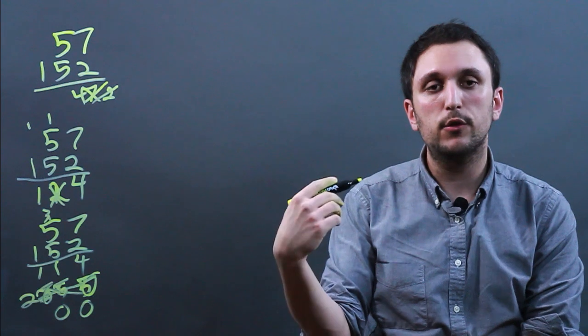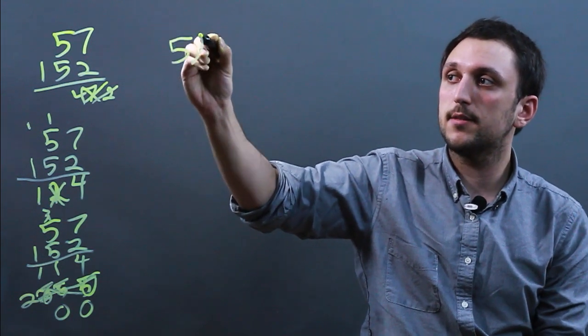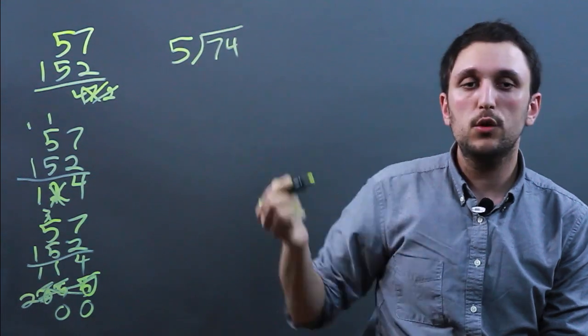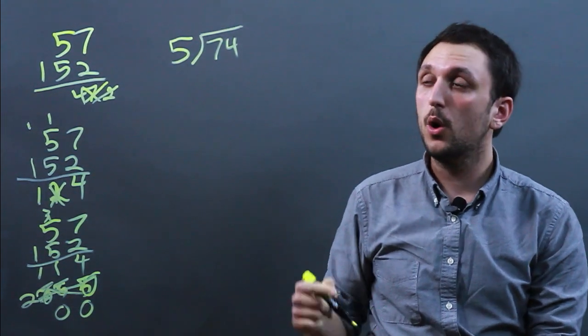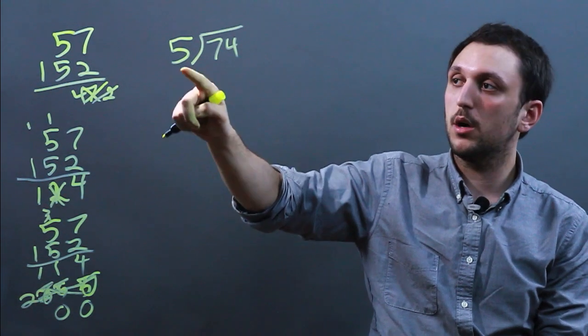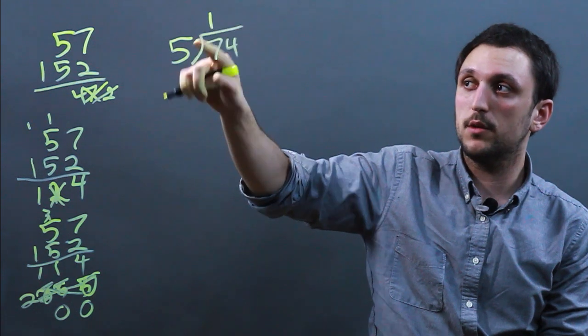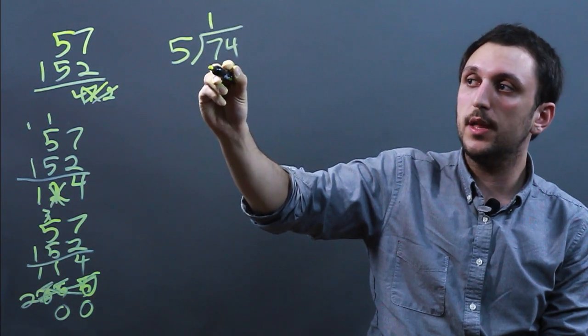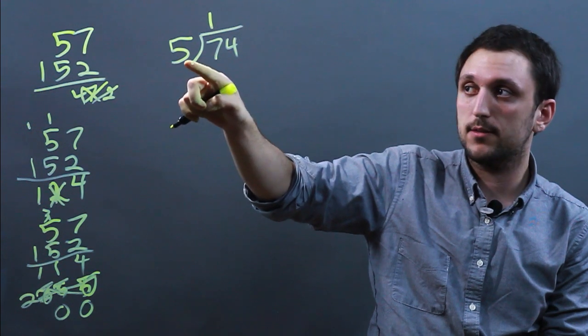Now let's look at division. So if we say 5 into 74, there's two basic errors you can make in division. One is you can subtract wrong. So when we say 5 into 7, well, 5 goes into 7 once, and you would then subtract 5 because that's the multiple.